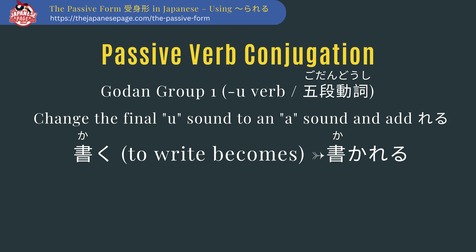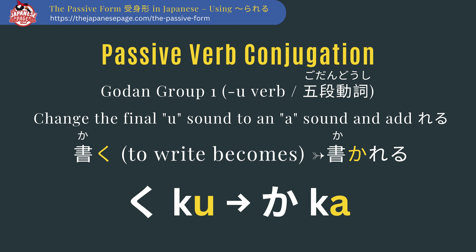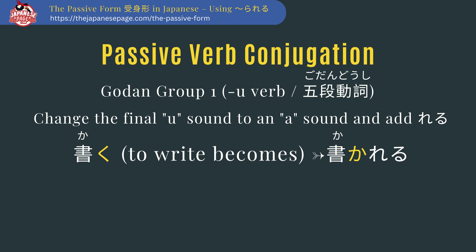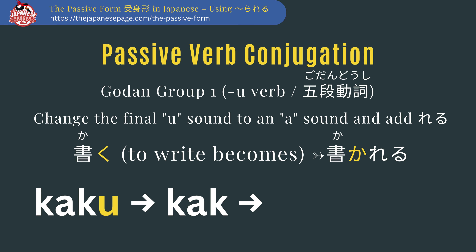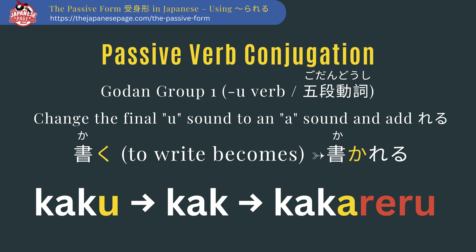For the godan group 1 verbs, change the final u-sound to an a-sound and then add reru. For example, kaku (to write) becomes kakareru. The ku has a u-sound in the ka-ki-ku-ke-ko column. We change that to an a-sound. Using romaji: the plain form is kaku, remove the u to get kak, add an a and reru, and it becomes kakareru.